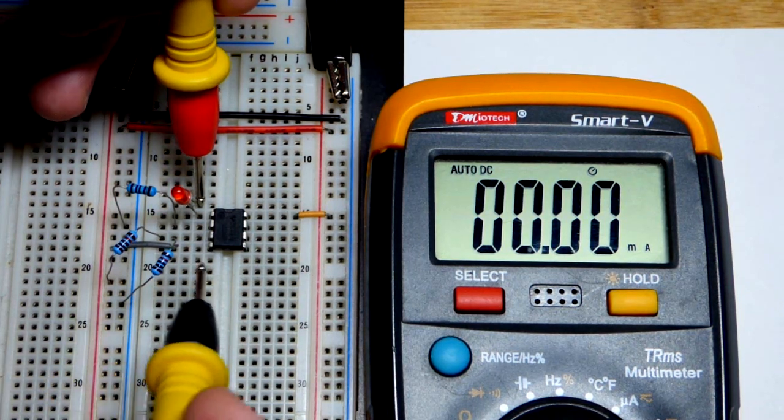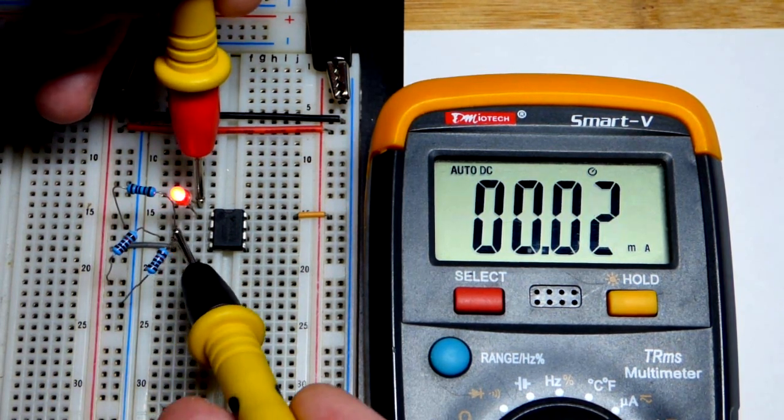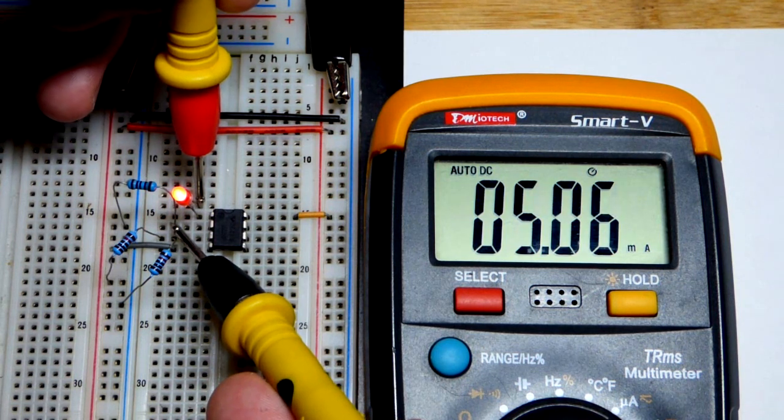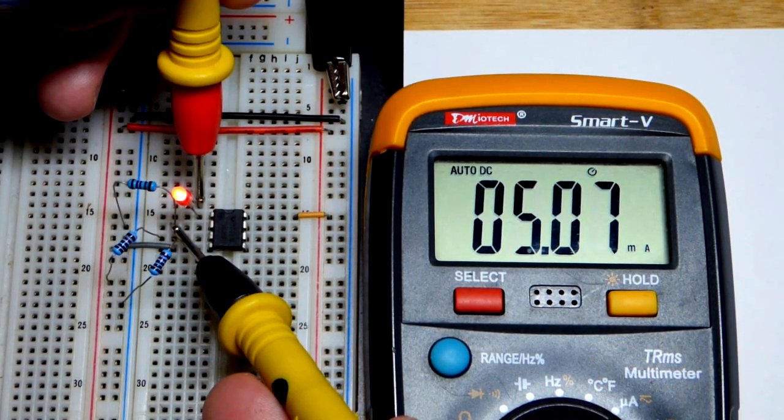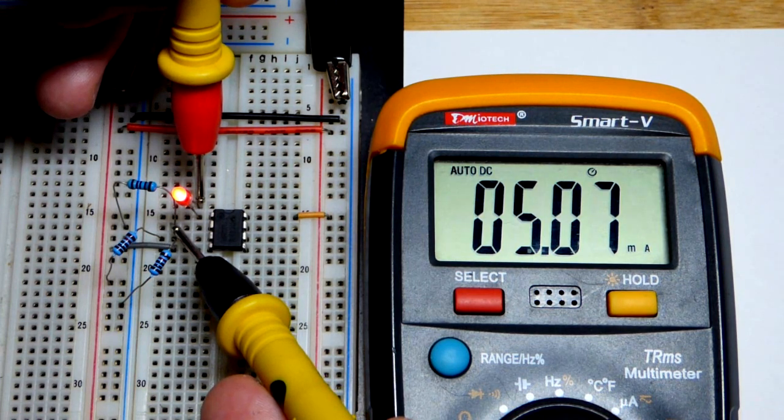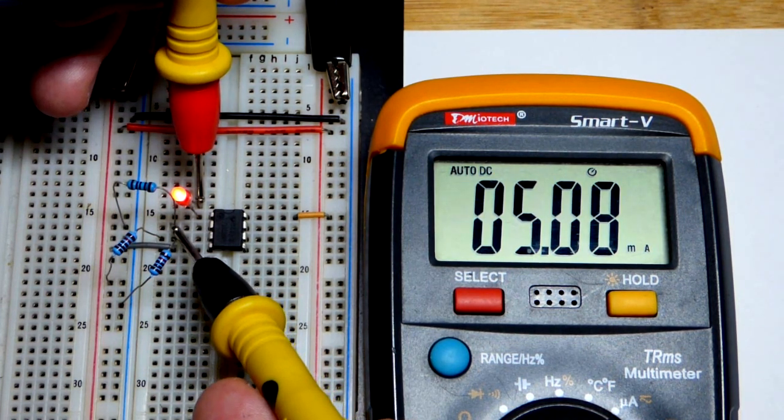And there we go. Once I get across from the cathode to the inverting input, where the current setting resistor is, you can see we got 5 milliamps of current.